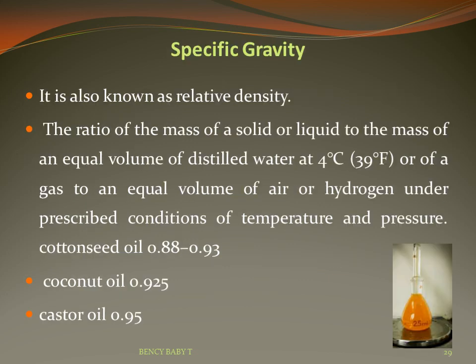Specific gravity, also known as relative density, is the ratio of the mass of a solid or liquid to the mass of an equal volume of distilled water at 4°C. A pycnometer is used for its determination. Examples: cotton seed oil is 0.80–0.93, coconut oil is 0.925, and castor oil is 0.95.